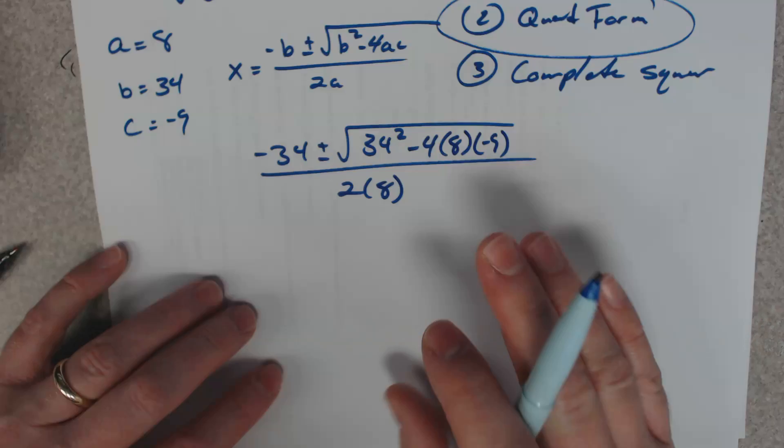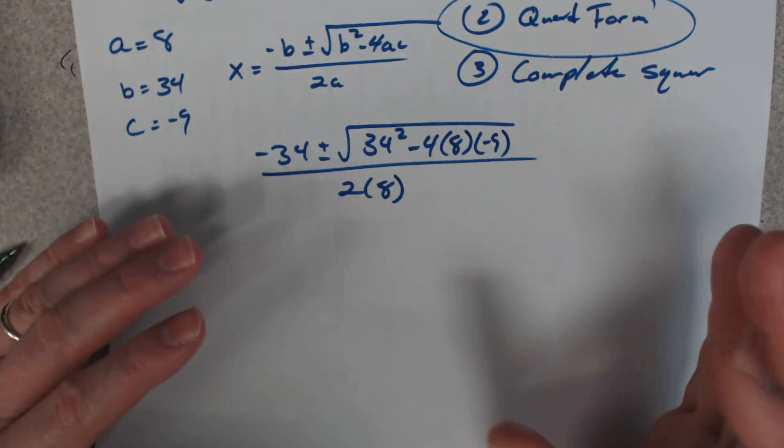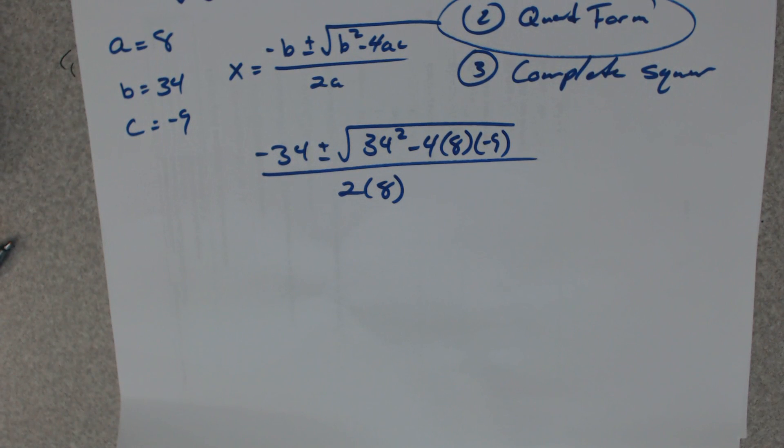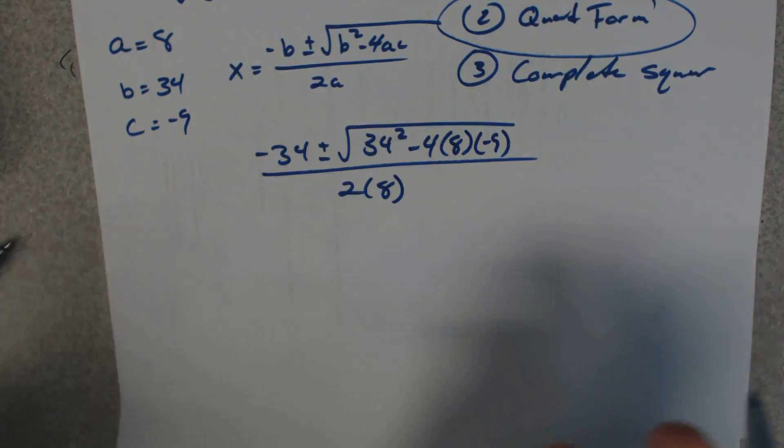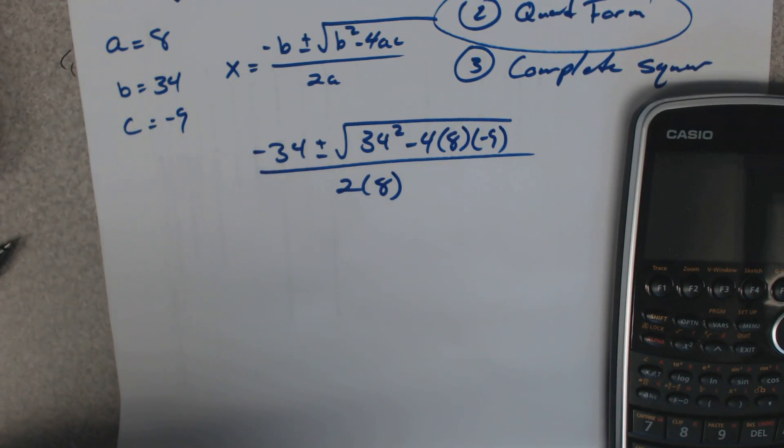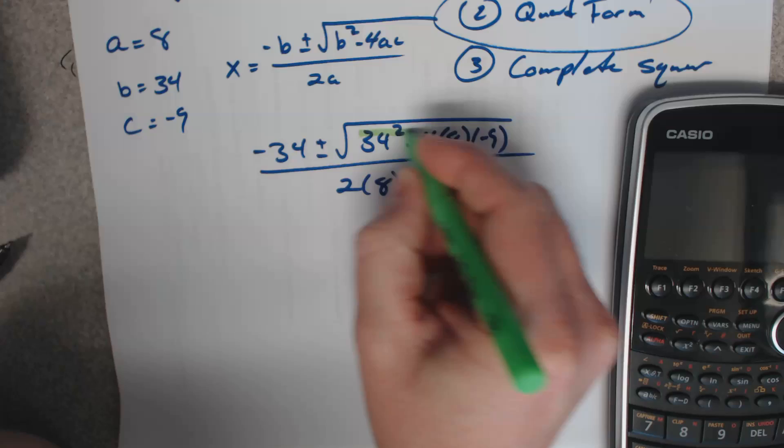Now, if I try to plug this in the calculator, I'll probably screw it up if I try to type it all in the calculator at once. So what I would suggest you do then is you always try to simplify what's under the radical.